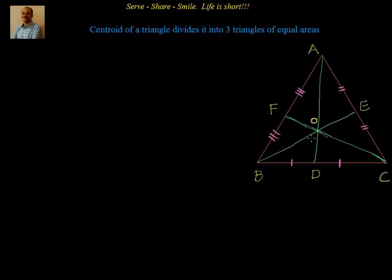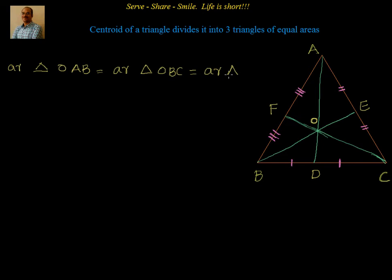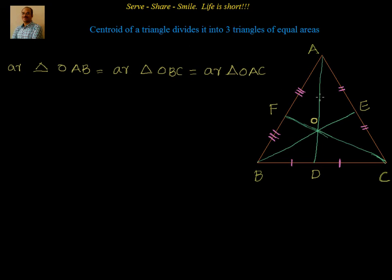Now we have to prove: what is the meaning of centroid of a triangle divides it into three equal triangles? That means if I take the centroid and join it with the vertices of the triangle, I should have equal areas. That means area of triangle OAB is equal to area of triangle OBC is equal to area of triangle OAC. So this is what we have to prove — we join the centroid O with the vertices to get three triangles OAB, OBC, and OCA, all of equal areas.